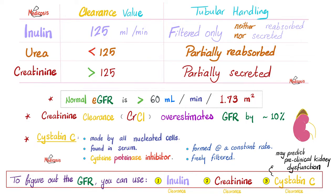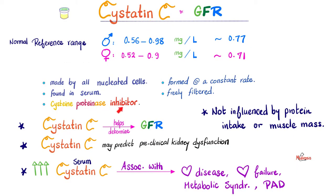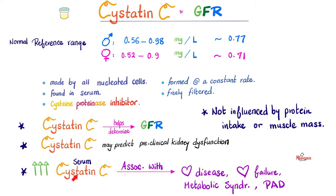If it ends in '-in,' it's a protein — and yes, Cystatin C is indeed a protein. What does it do? It is a cysteine proteinase inhibitor. Who makes it? All of your nucleated cells can make cystatin, which means red blood cells cannot, because mature red blood cells do not have nuclei. It is formed at a constant rate, it is freely filtered, you find it in the serum, and we can use it to determine your glomerular filtration rate. It is very accurate and even has prognostic value, not just diagnostic value. It can predict preclinical kidney dysfunction, and if it's very high in the blood, it can predict heart disease, heart failure, metabolic syndrome, and even peripheral arterial disease.